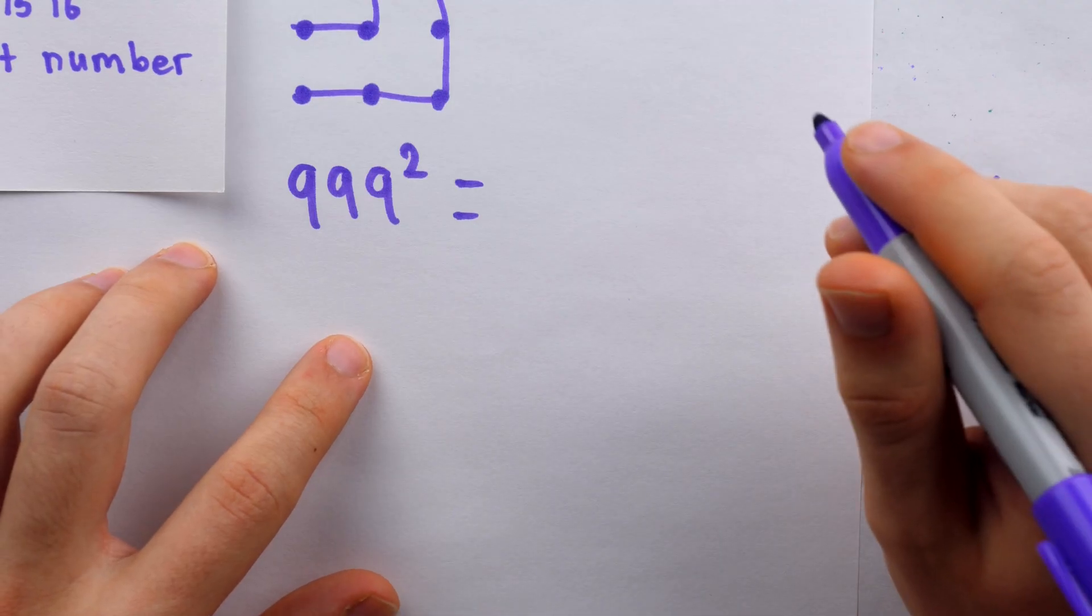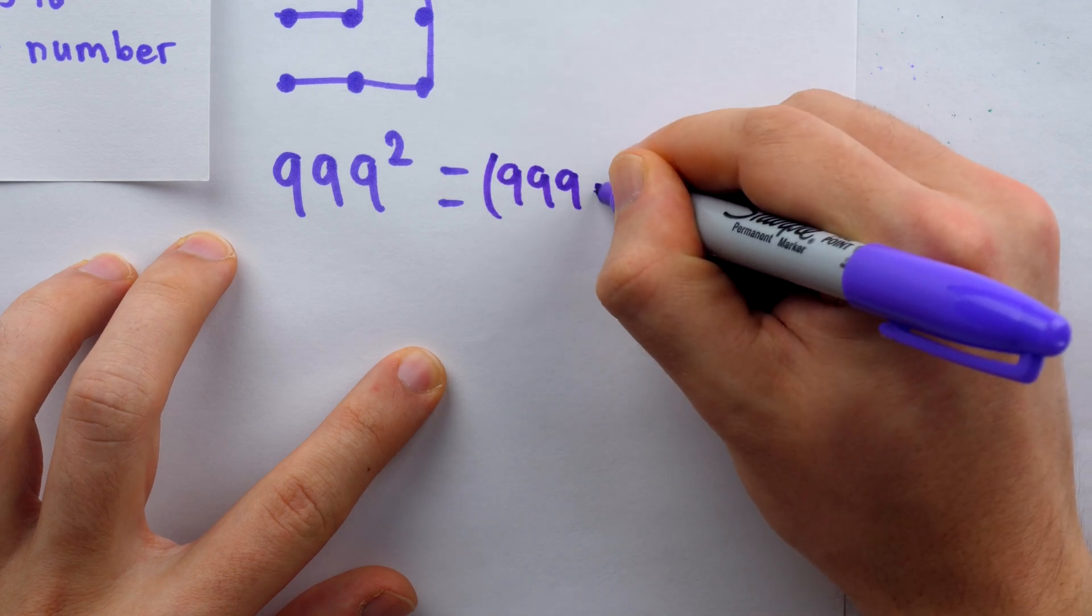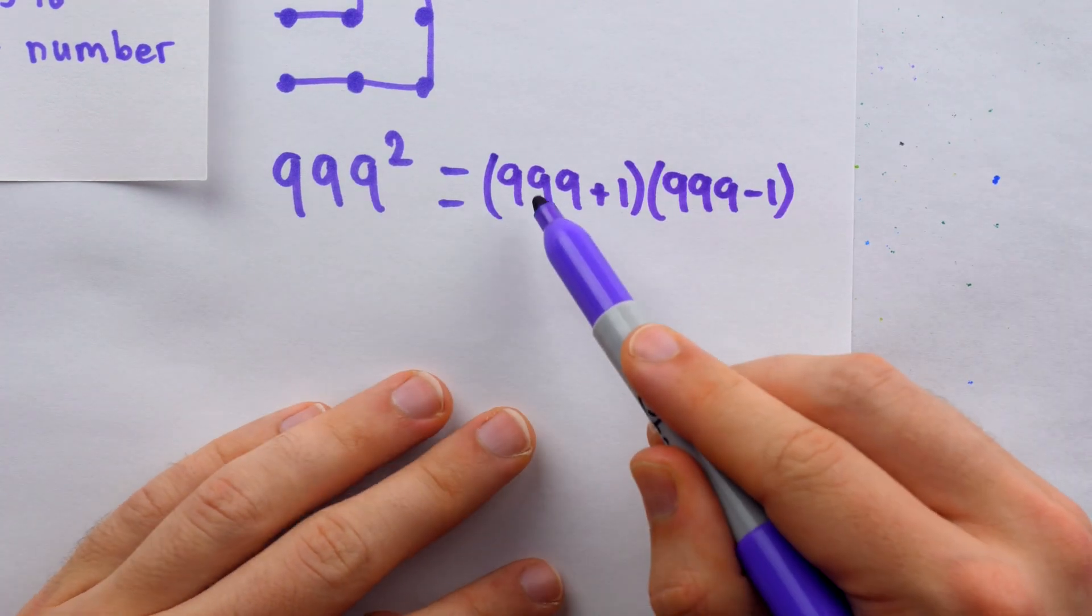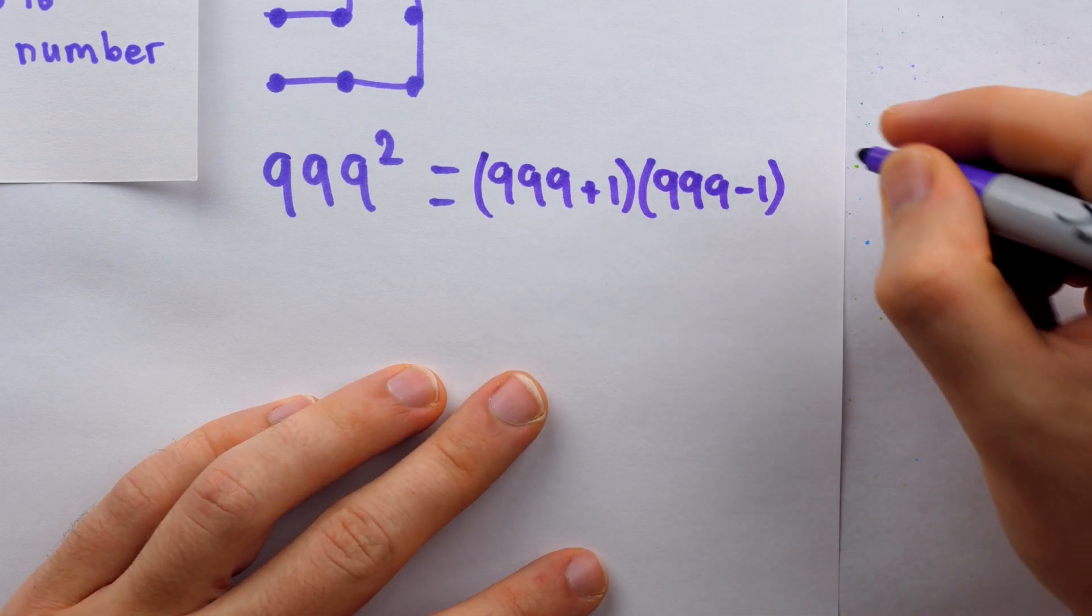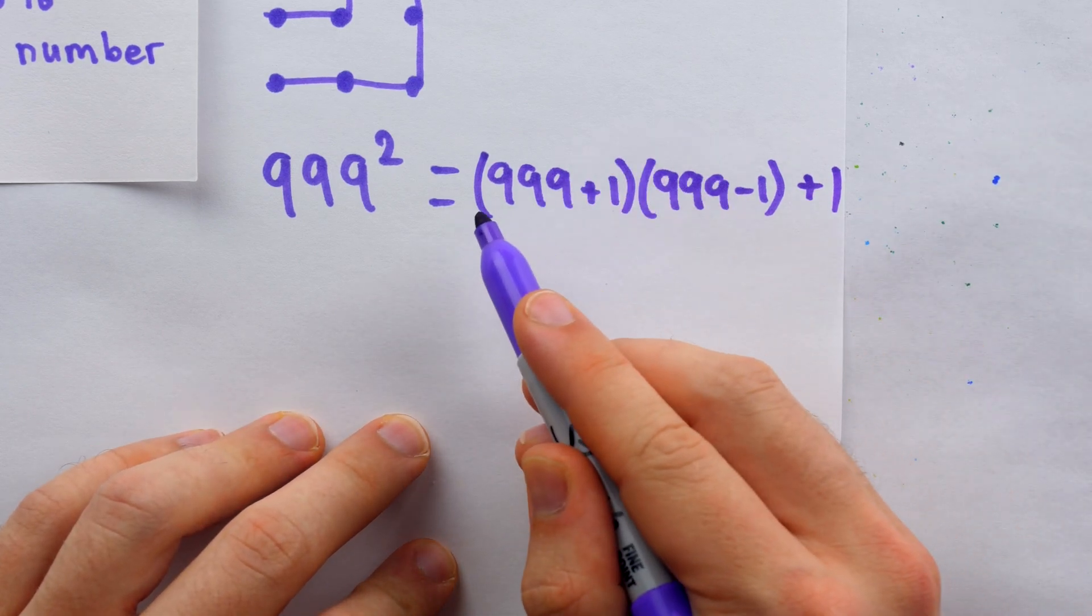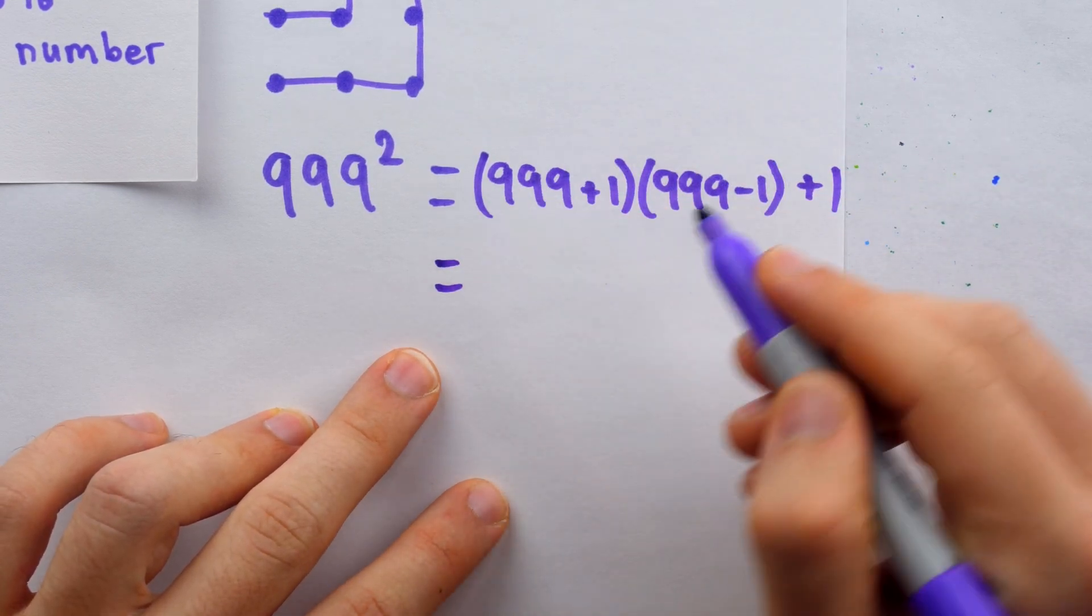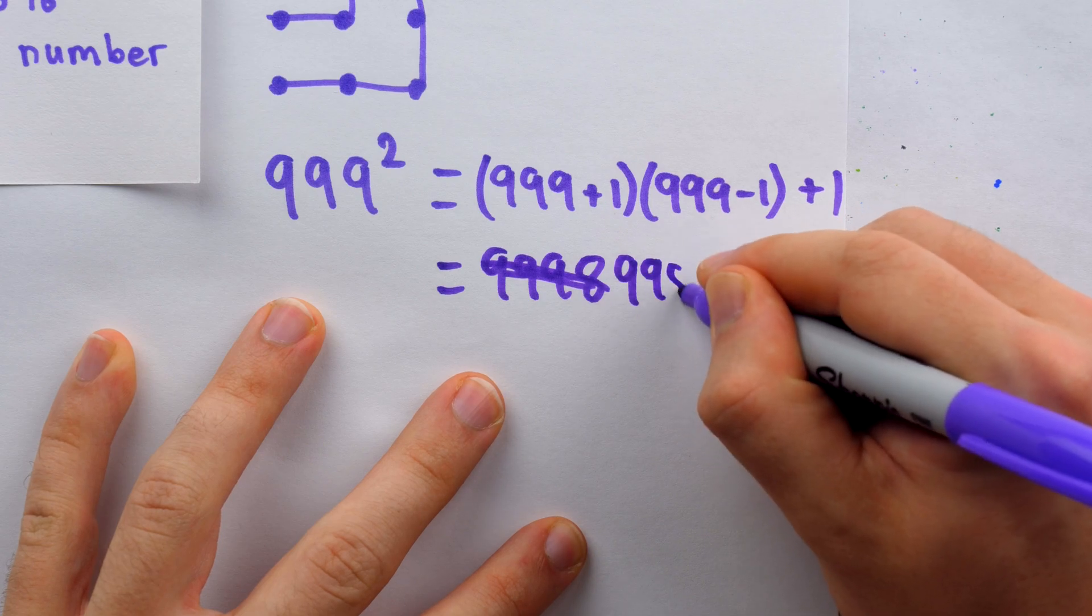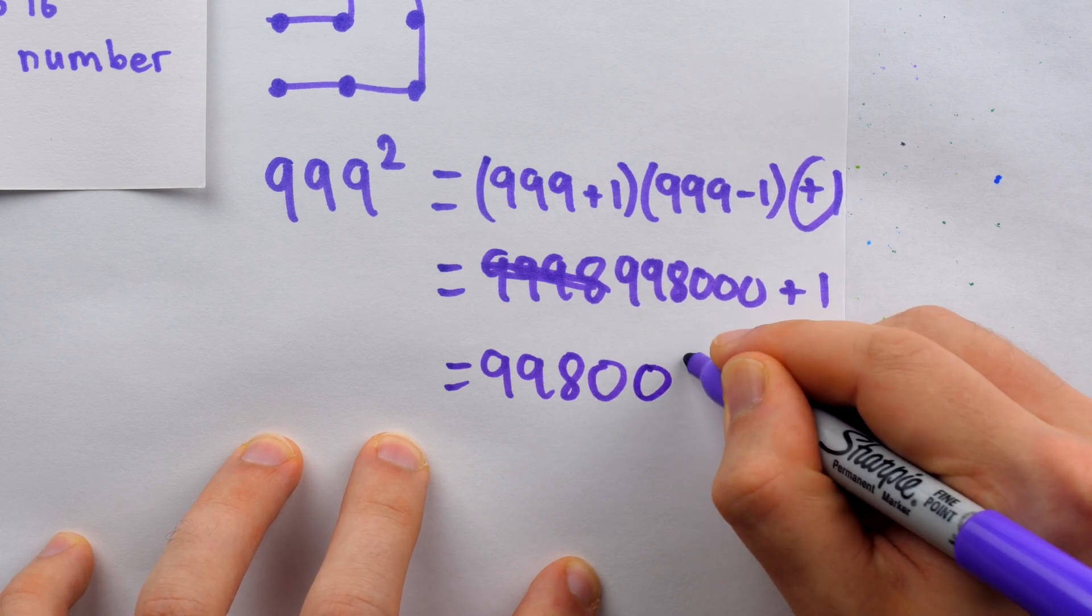To do this squaring easily, think about it as a difference of squares. We can do 999 plus 1 multiplied by 999 minus 1. This is just going to give us 999 squared, but it's also going to give us a minus 1, which we don't want. So we would just have to add 1 to this to correct our calculation. This multiplication is a breeze because it's 999 plus 1, which is 1000, times 999 minus 1, which is 998. So we have 1000 times 998. So 998,000 plus 1 at the end. So that is 998,001.